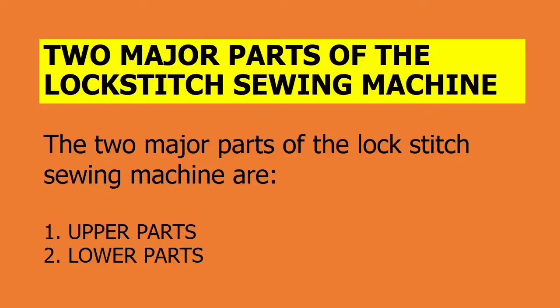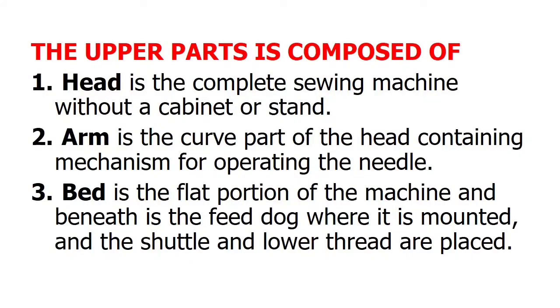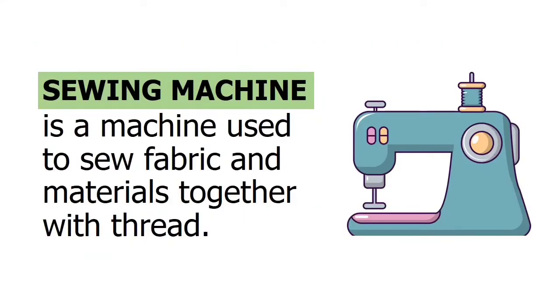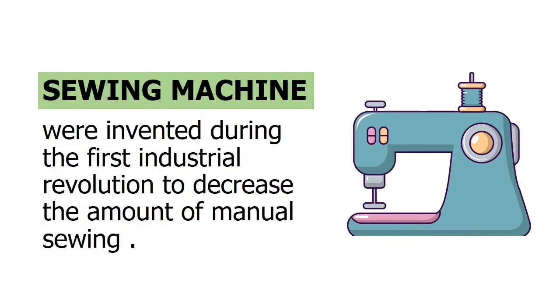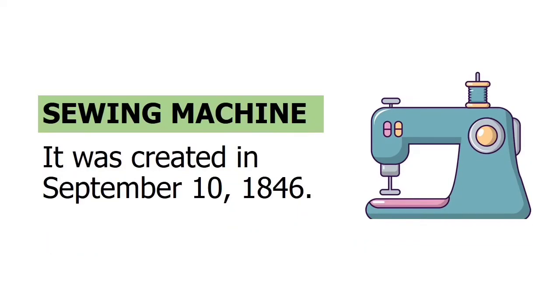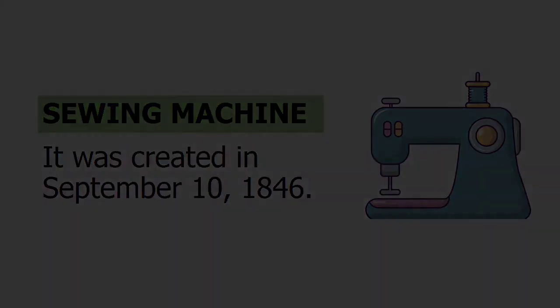At this moment, let's talk about the two major parts of a lock-stitch sewing machine: upper parts and lower parts. The upper parts are composed of head, arm, and bed. Head is the complete sewing machine without a cabinet or stand. Arm is the curved part of the head containing the mechanism for operating the needle. Bed is the flat portion of the machine; beneath it the feed dog is mounted, and the shuttle and lower thread are placed. By the way, a sewing machine is a machine used to sew fabric and materials together with thread. It was invented during the first industrial revolution to decrease the amount of manual sewing, and was created on September 10, 1846.